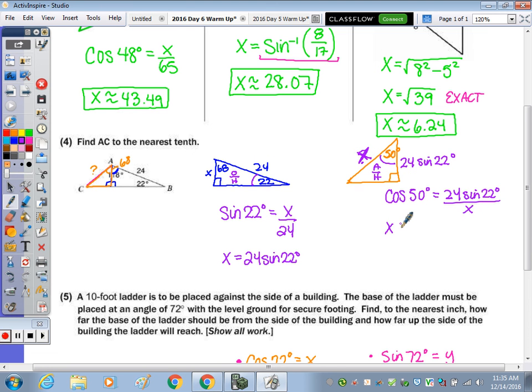So it would be x times the cosine of 50 degrees equals 24 sine of 22 degrees. Divide by the cosine of 50 degrees. Those cancel out, and we have x equals 13.98682567. So rounding to the nearest tenth, AC is going to be approximately, that eight is going to bump it up to a ten, so 14.0.